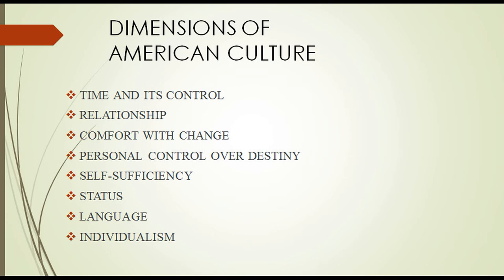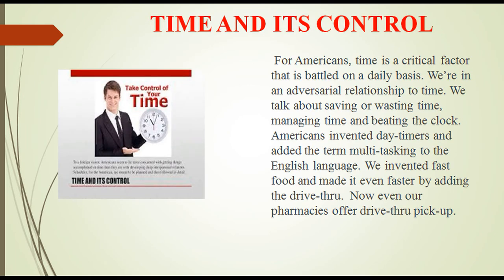The dimensions of American culture include: time and its control, relationship, comfort with change, personal control over destiny, self-sufficiency, status, language, and individualism. For Americans, time is a critical factor that is battled on a daily basis — we are in an adversarial relationship to time. We talk about saving or wasting time, managing time and beating the clock. Americans invented day timers and added the term 'multitasking' to the English language. We invented fast food and made it even faster by adding the drive-thru, and now even pharmacists offer drive-thru pick-up.